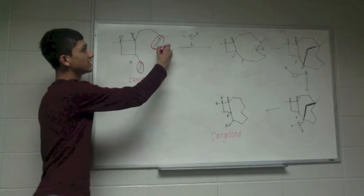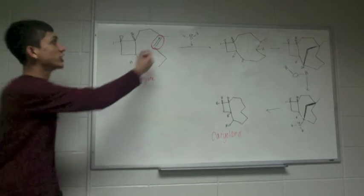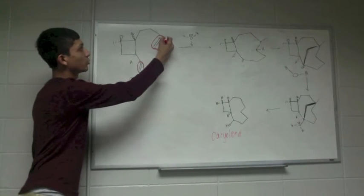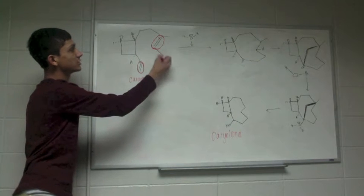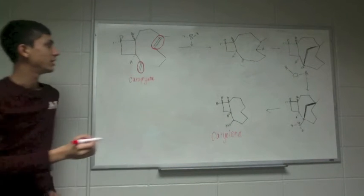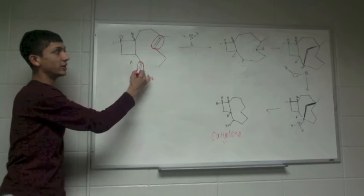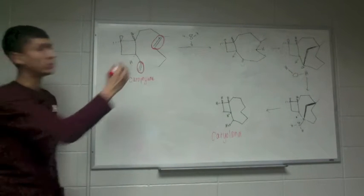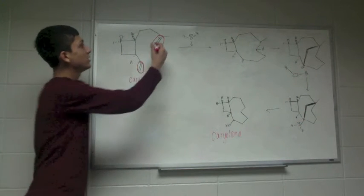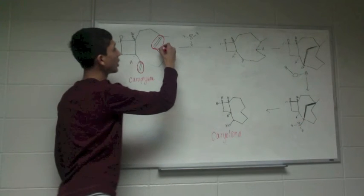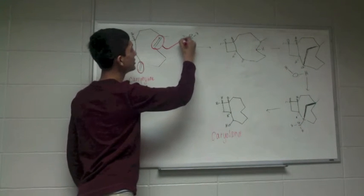However, this is a more substituted alkene — it's tertiary: one, two, three carbons. And then this one is secondary. So to produce a more stable carbocation, we will use this one to attack.